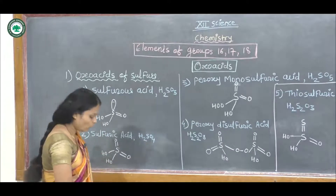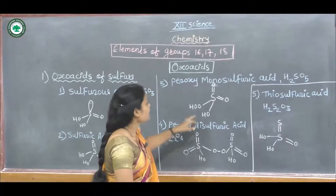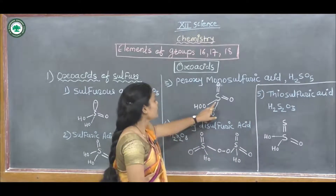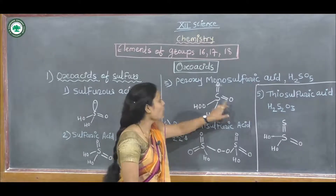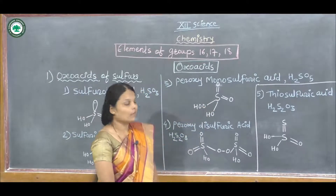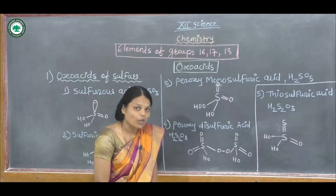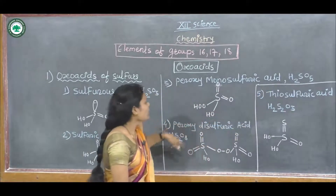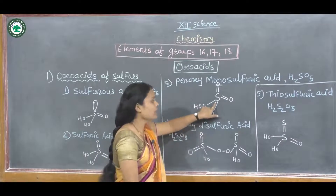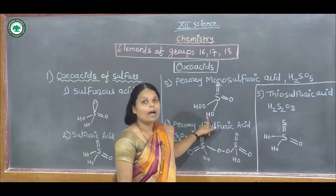The third one is peroxymonosulfuric acid, which means 1 sulfur atom, 5 oxygen atoms, and 2 hydrogen atoms. In the structure, sulfur has two double bonds to oxygen, an HO bond attached, and an HOO group attached to the sulfur atom. Its formula is H₂SO₅. We can count 5 oxygens, 1 sulfur, and 2 hydrogen atoms.